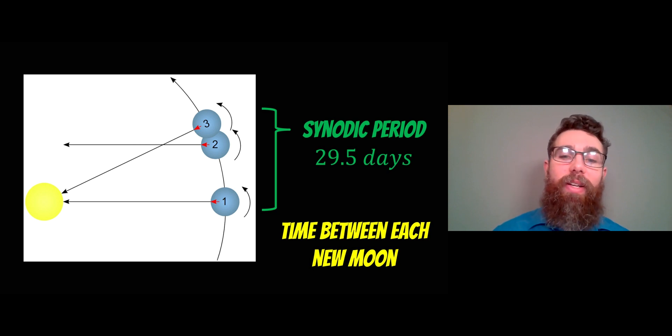So the synodic period is actually longer than one orbital period. That lunar phase that we see when we look at the Moon from Earth is a little bit longer than it would be for a single orbital period.